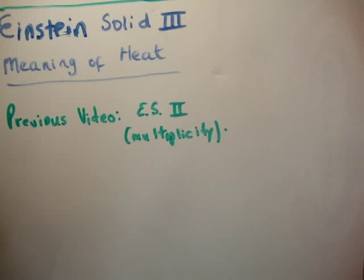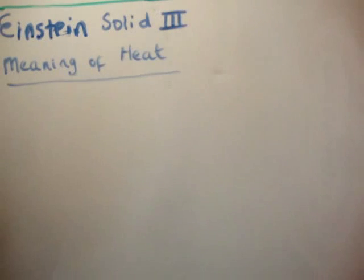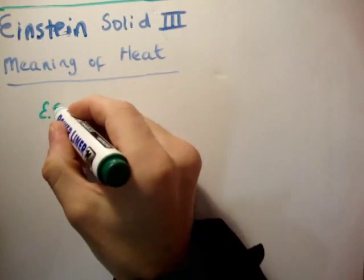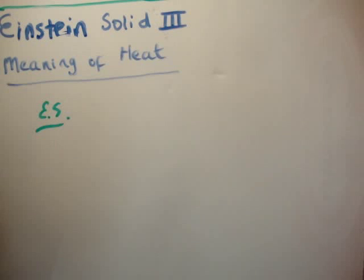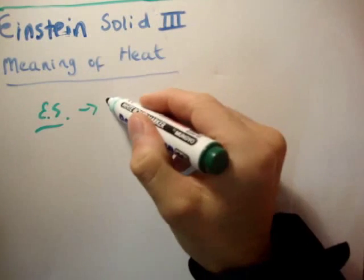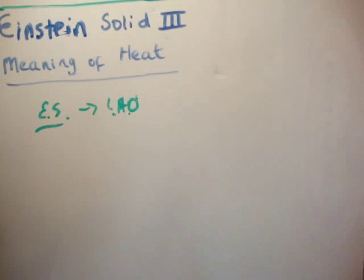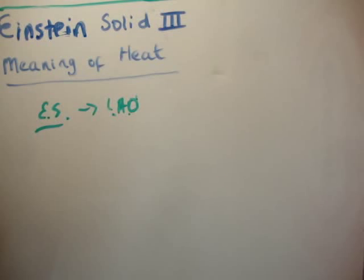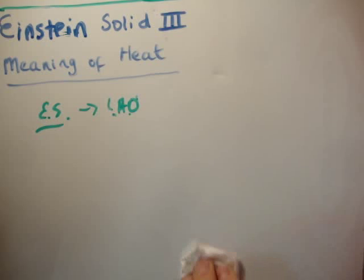The previous video, Einstein Solid number 2, discussed the multiplicity of an Einstein solid. Let's do some quick revision. An Einstein solid is where we imagine that the energy stored in the solid is being stored by linear harmonic oscillators. Each atom is a linear harmonic oscillator — quantized, of course — vibrating at different frequencies and thus having different quantized energy levels. We then worked out the number of microstates and macrostates an Einstein solid would have.